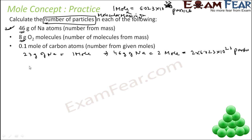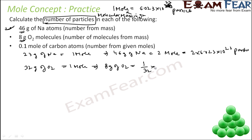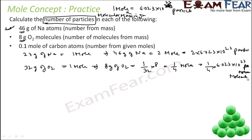Second: 8 grams of oxygen molecule. Oxygen is 16, so O2 is 32. Therefore 32 grams of oxygen molecule implies 1 mole. So 8 grams of oxygen molecule implies 1 divided by 32 into 8, which is 1/4 moles. And 1/4 moles is 1/4 into 6.023 into 10 to the power 23 molecules. Solving this, you get 1.51 into 10 to the power 23 molecules.